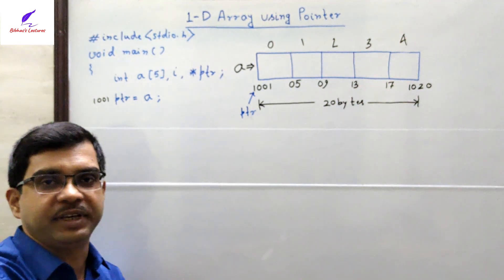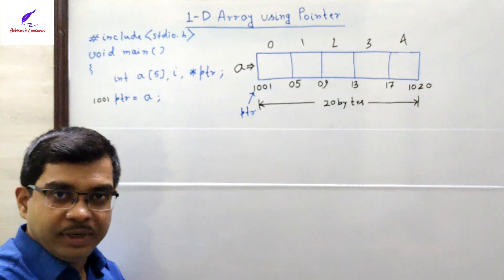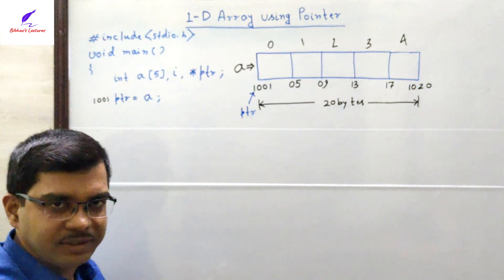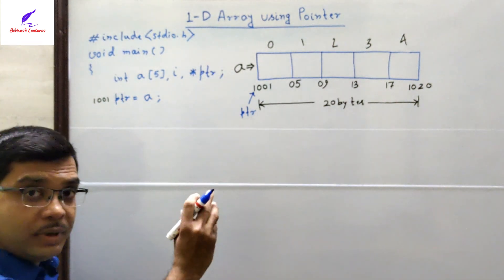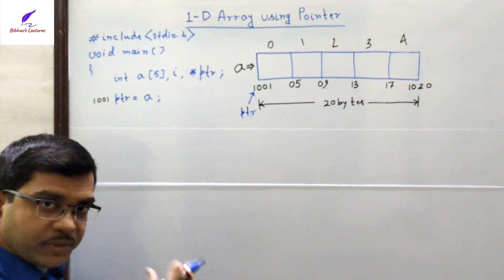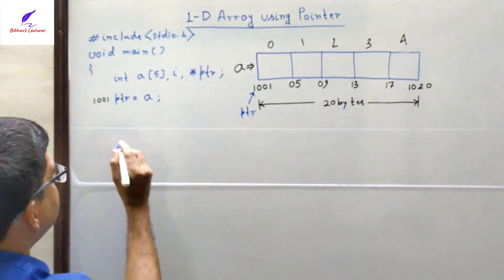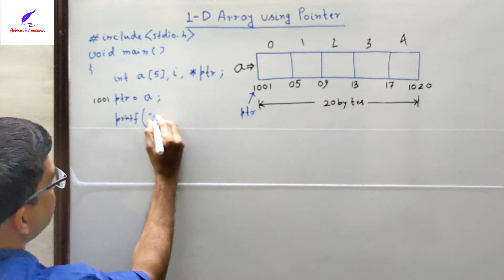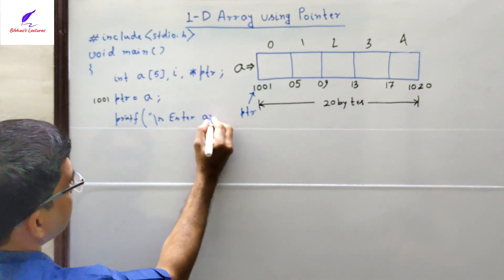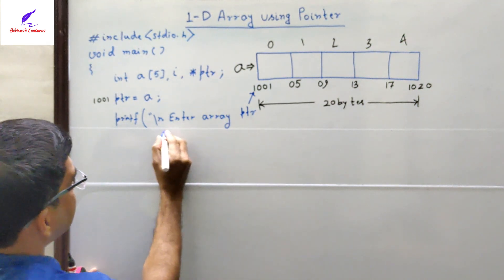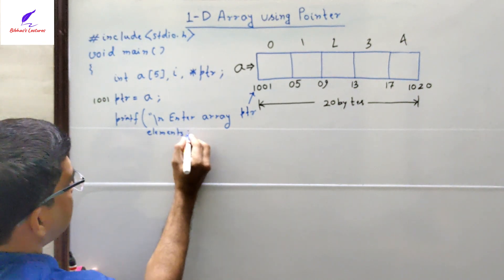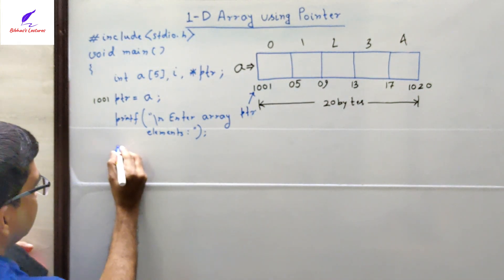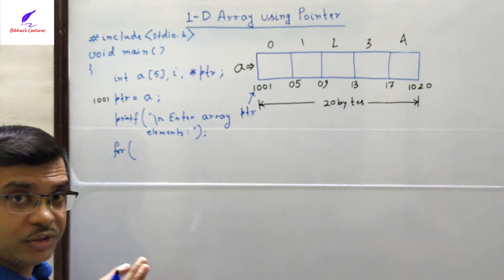With this pointer, we will reach each location of the 1D array to store values. We first print: 'Enter array elements'. To store 5 values, we execute a loop: for(i = 0; i < 5; i++). The loop variable i takes values 0, 1, 2, 3, 4 — iterating 5 times to cover each array location.